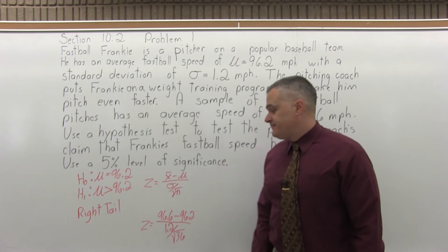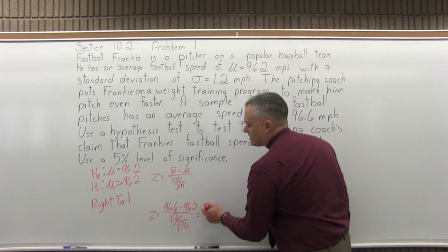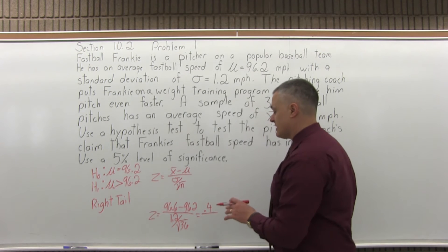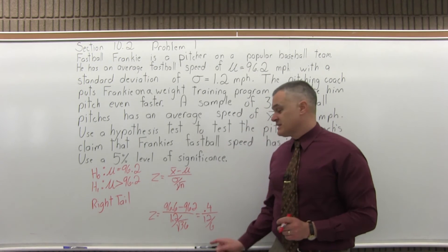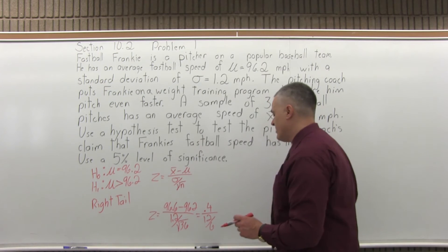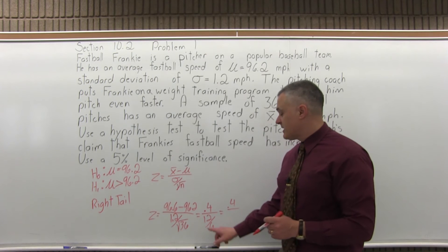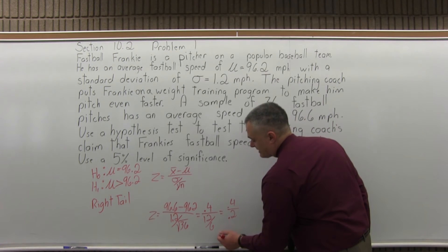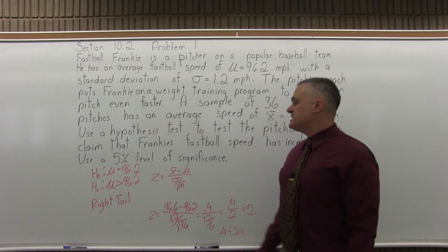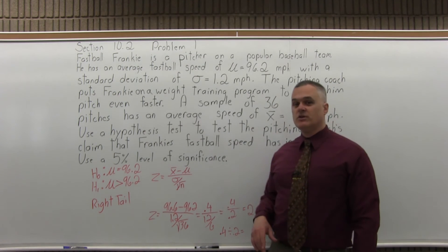Let's work that down. In the numerator, 96.6 minus 96.2 gives us 0.4 — positive 0.4. You have to pay attention to the sign; sometimes it's negative, in this case positive. The square root of 36 is 6, because 6 times 6 is 36. So the denominator is 1.2 divided by 6, which equals 0.2. Then 0.4 divided by 0.2 equals 2. So step 4 was this computation — we took the formula, filled in the numbers from the problem, and got an answer of 2.